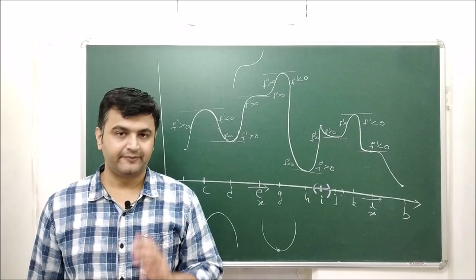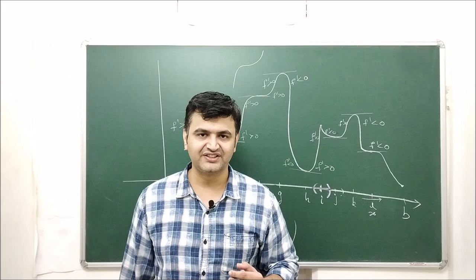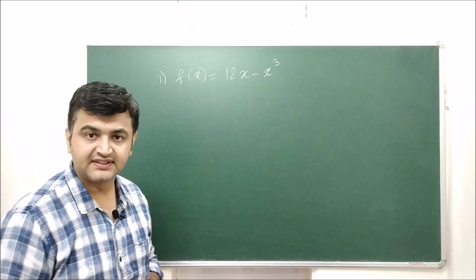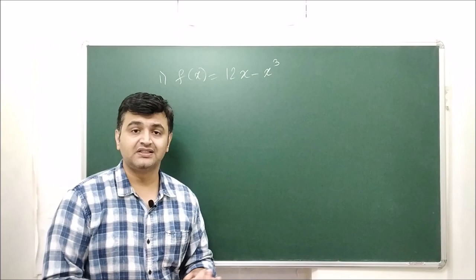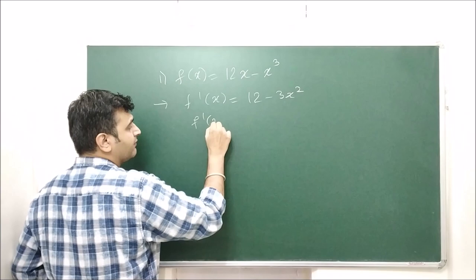I'm not going to write down the theorem formally — you can find the statement in any standard book like Thomas's Calculus or simply Google it. Now let me take two examples. Consider this function with domain minus infinity to infinity. You have to find the critical points, determine the intervals where the function is increasing and decreasing, and conclude at which points you have local maxima or local minima.